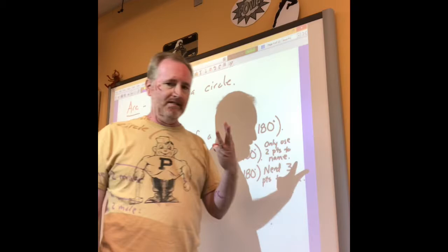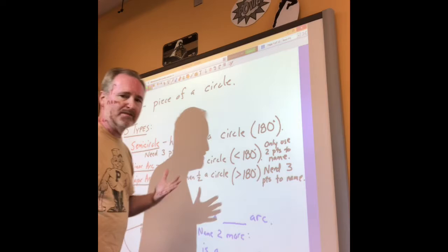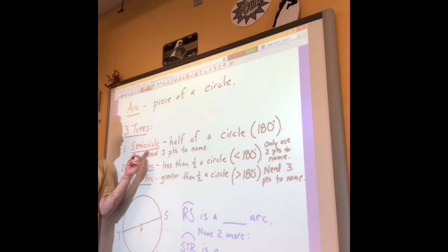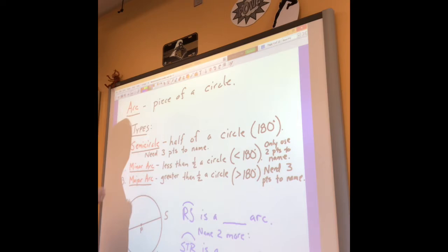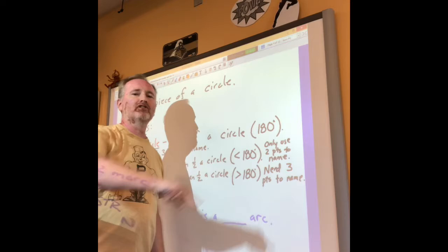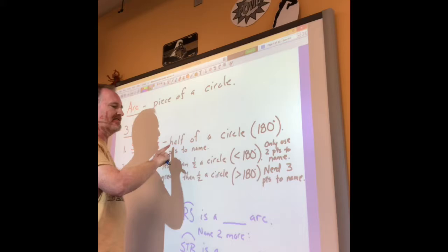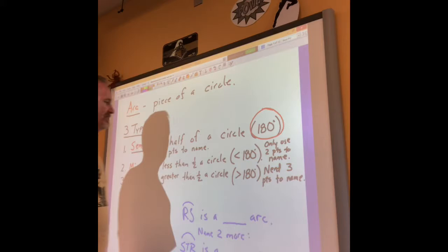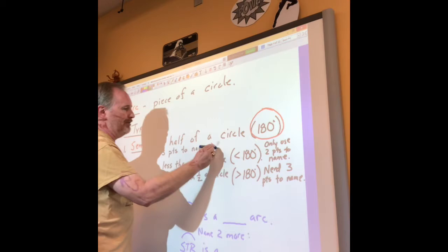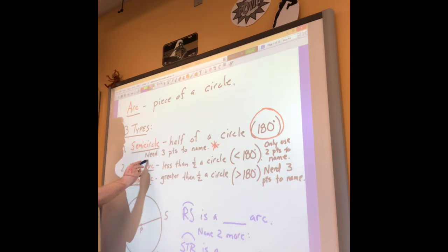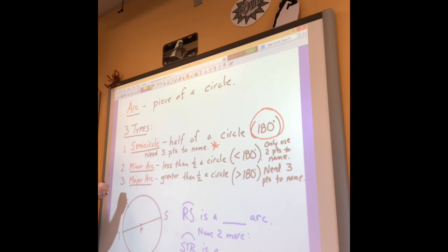There are three types of arcs - I'm going to go medium, small, large order. The medium one we call a semicircle. The prefix 'semi' literally means half. A semicircle is exactly half of a circle. Since a circle has 360 degrees, a semicircle has 180 degrees - that's halfway around the circle. An important thing about naming: a semicircle requires three points to name it.